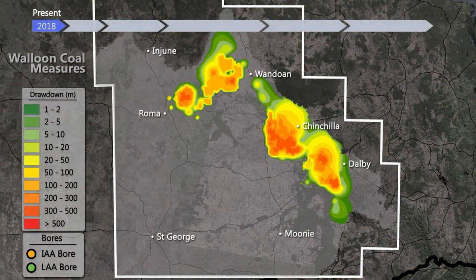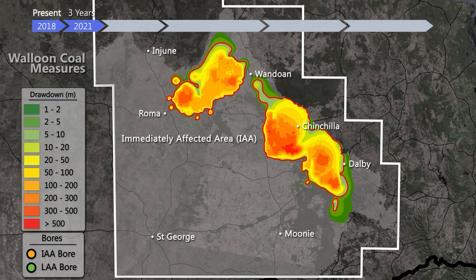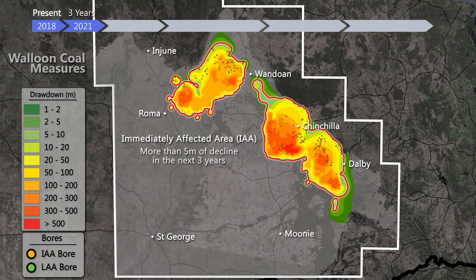In the short term, impacts are predicted as the Immediately Affected Area, or IAA, which is the area of an aquifer where more than five metres of decline is predicted within the next three years, shown here for the Walloon coal measures as a red line.